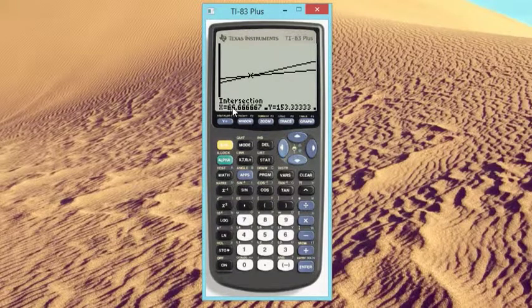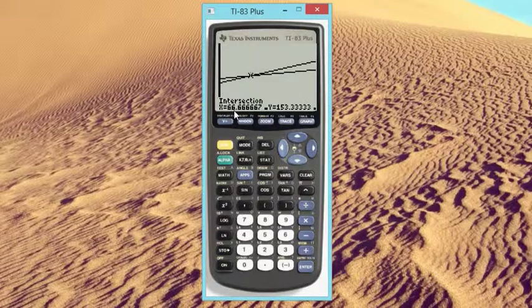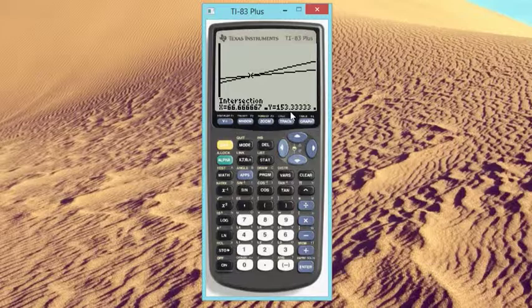Near the end of the 66th day, or about two-thirds of the way through the 66th day, the younger tree will surpass the older tree. Both trees will be 153.3 repeating centimeters each.